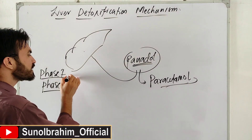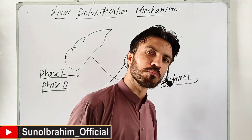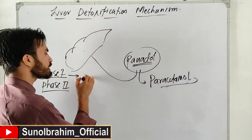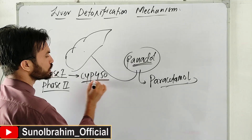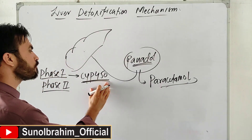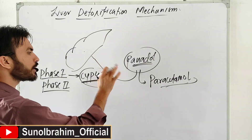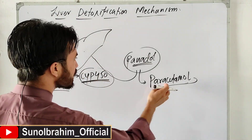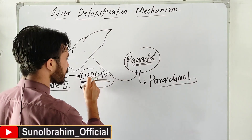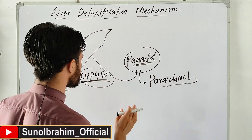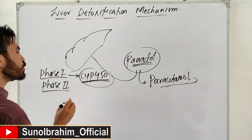In Phase One, the liver has a large family of enzymes called the CYP450 family. These are the tools - enzymes that the liver uses. Two important subfamilies are CYP3A4 and CYP2D6, which process the Paracetamol.